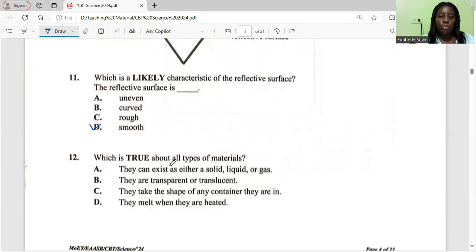Which is true about all types of materials? They can exist in either solid liquid or gas, they are transparent or translucent, they take the shape of any container that they're in, or they melt when they are heated. They can exist in three states. So that's the correct answer.